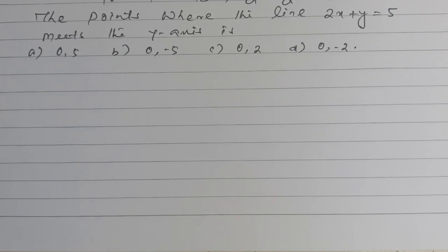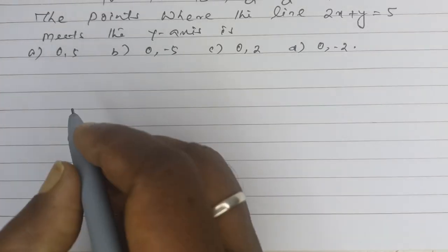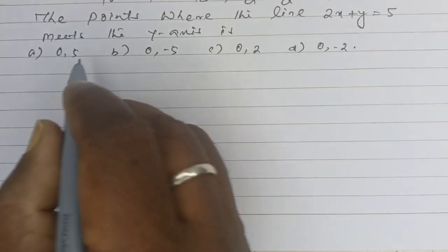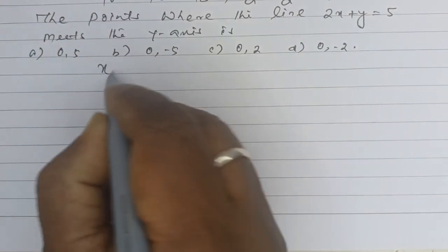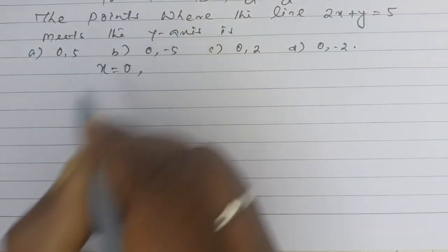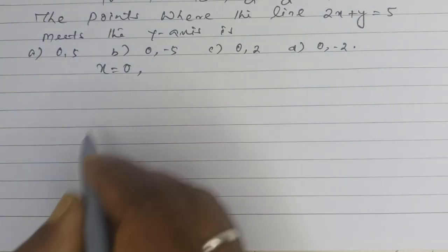The point where the line 2x plus y equals 5 meets the y-axis is found by setting x equal to 0, since meeting the y-axis means x is equal to 0.